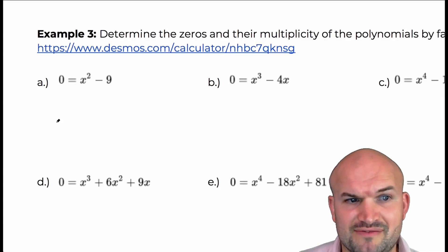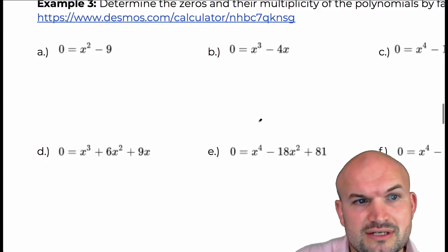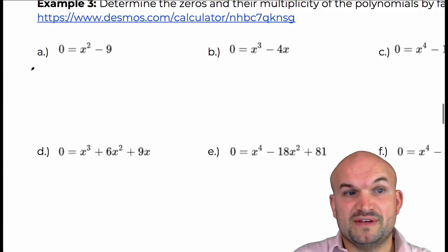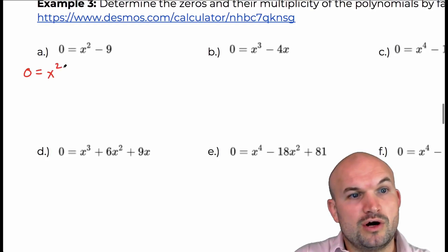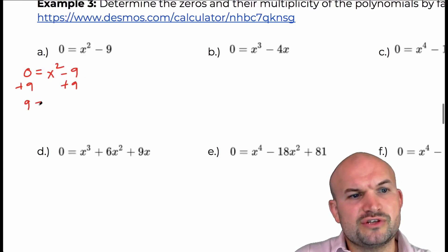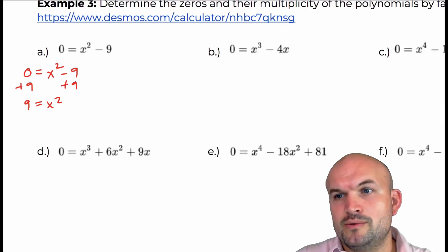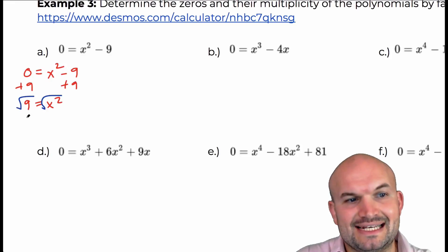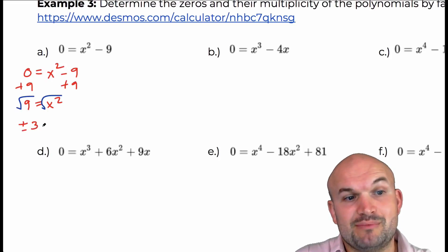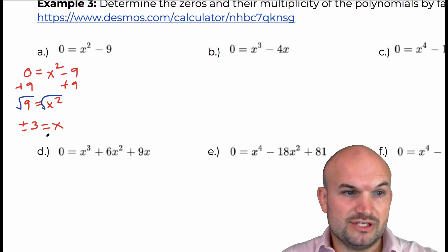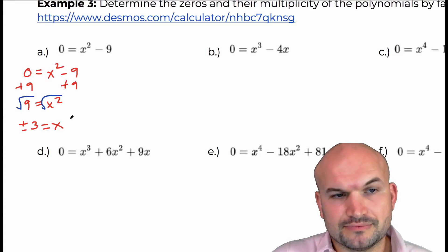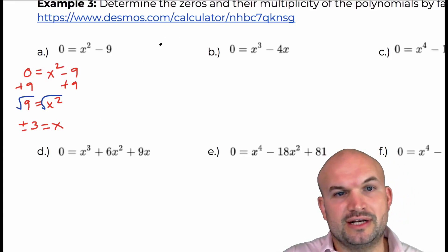In this example, it's a quadratic — we have zero equals x² minus nine. A lot of students will just use the square root method: add nine to both sides, then take the square root. But students often forget that when we introduce the square root to solve for x, we have to include plus or minus. So the solutions are plus or minus three. It's also not very obvious what the multiplicity is, which is why factoring is helpful.